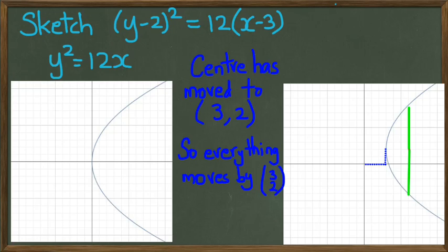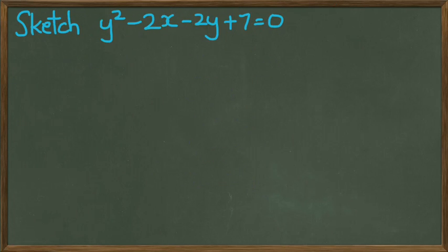In the next example, I'll be looking at completing the square. In this example, I'd like to sketch y squared minus 2x minus 2y plus 7 equals zero. Obviously I need to complete the square if I want to sketch this, so I'm going to work with the y squared minus 2y first.